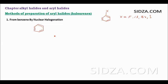Let's discuss the preparation of haloarines or aryl halides. Aryl halides have the general formula of an aromatic ring with halogens. The halogen atom can be fluorine, chlorine, bromine, or iodine.